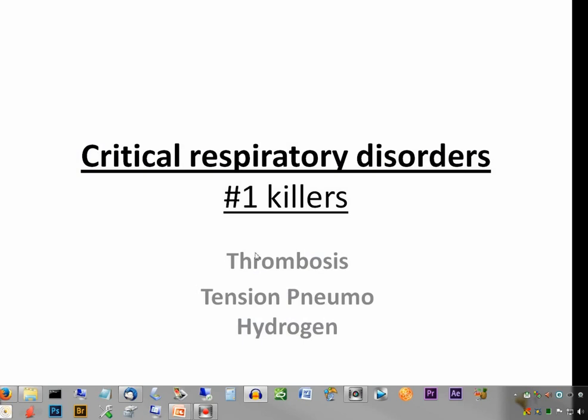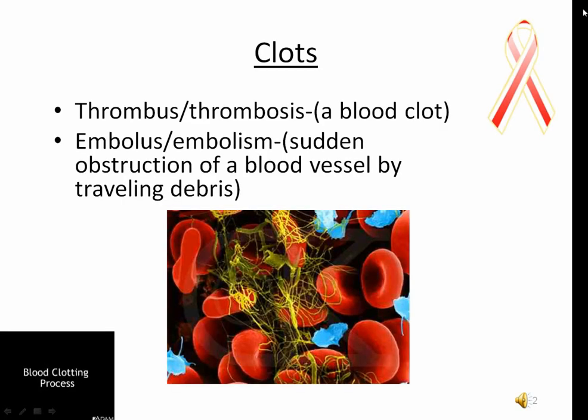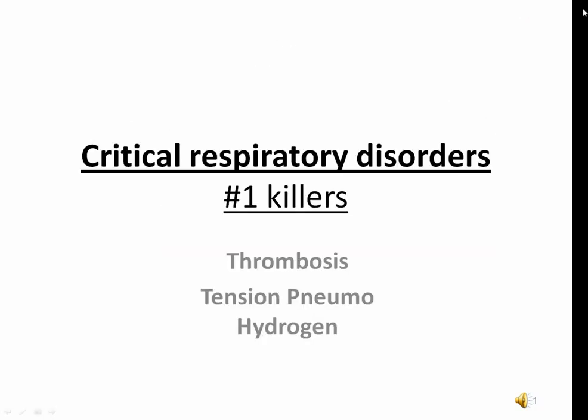Three common critical lung problems are pulmonary embolism, often called PE; pneumothorax, which may be referred to as a PN; and acid-base imbalance. PEs occur as a result of a clot or object that takes place in the circulation and travels into the pulmonary vessels. Pneumothorax, hemothorax, or pleural effusions occur when air, fluid, blood, or pus enters the pleural space, interrupting negative pressure around the lungs.